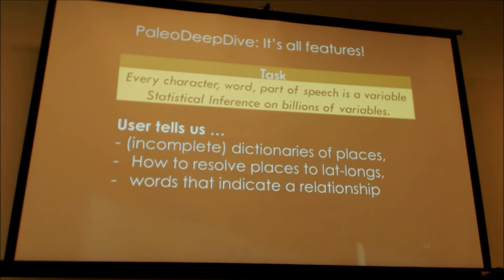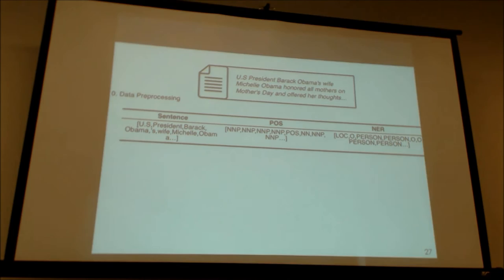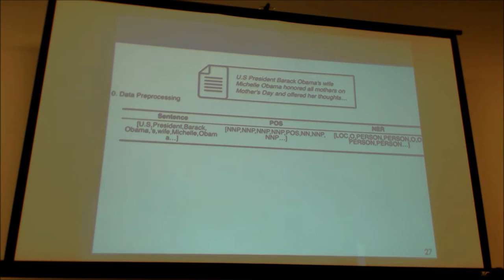To be concrete: you want to infer from the sentence 'U.S. President Barack Obama's wife Michelle Obama honored all mothers on Mother's Day' that Barack Obama is married to Michelle Obama — because of the possessive 'Obama's wife.' The pre-processing produces a sentence broken into tokens with part-of-speech tags, noun phrases, verbs, and NER tags indicating what's a person, place, or thing.